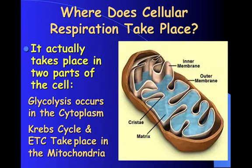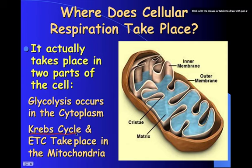Where does cellular respiration take place? It takes place in the mitochondria. The main parts — the Krebs cycle and the electron transport chain — take place in the mitochondria, while glycolysis occurs outside in the cytoplasm.